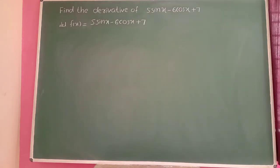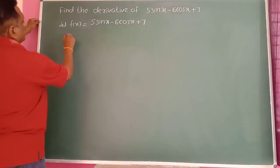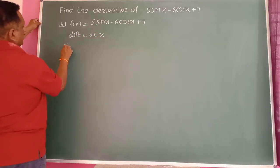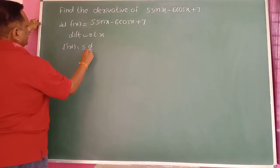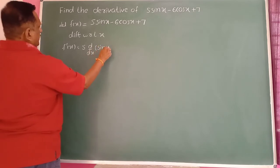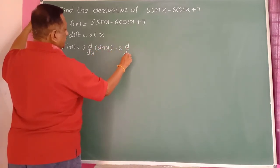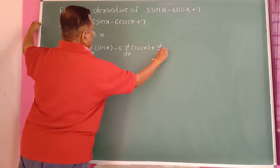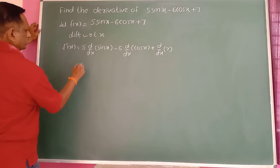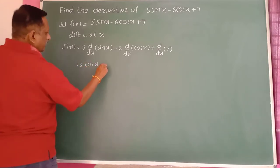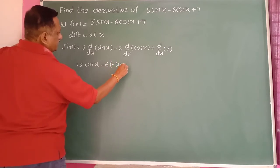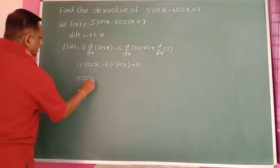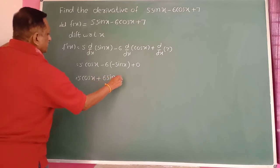Find the derivative of 5 sin(x) minus 6 cos(x) plus 7. Differentiating with respect to x, this equals 5 times differentiation of sin(x), which is cos(x), minus 6 times differentiation of cos(x), which is minus sin(x), and the constant 7 differentiates to 0. Therefore the answer is 5 cos(x) plus 6 sin(x).